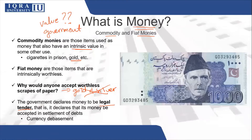Even on every currency note it is written that it is used in order to settle debts. But if you go to the central bank and give them 1,000 rupees and ask for gold or silver, they are not going to give you anything like that. They will give you 100-rupee notes or 50-rupee notes in exchange — but that is it.